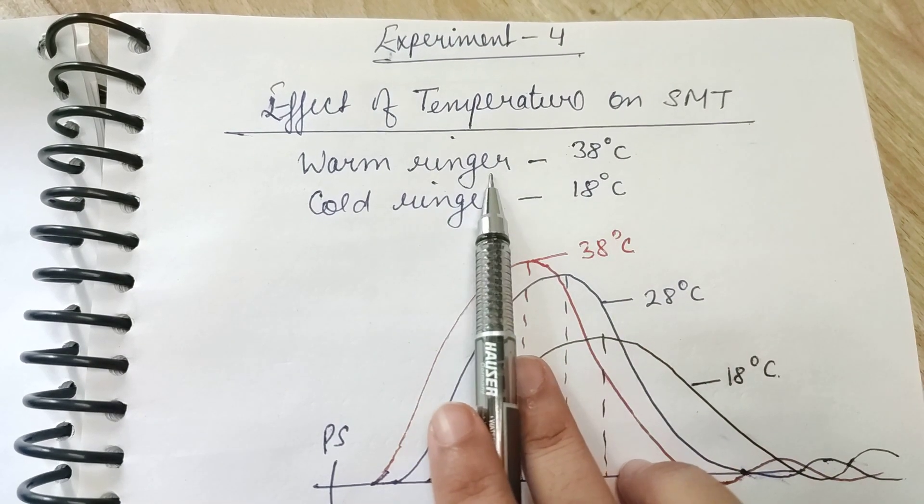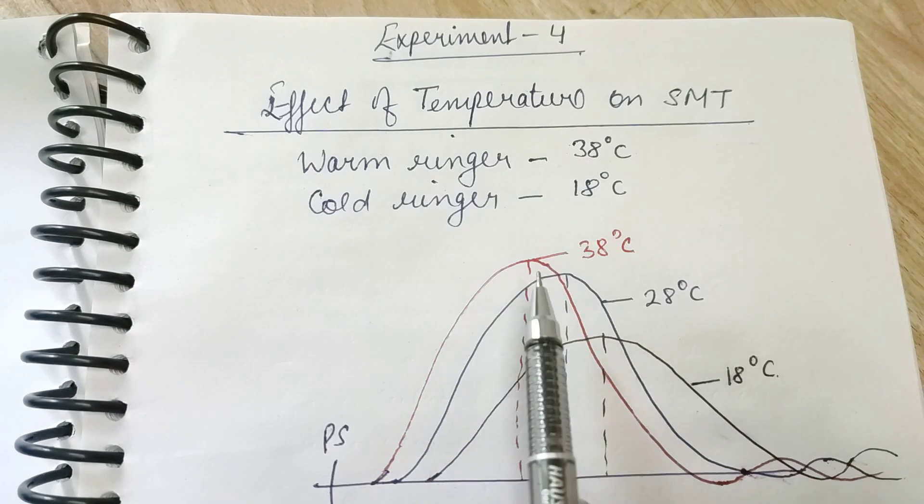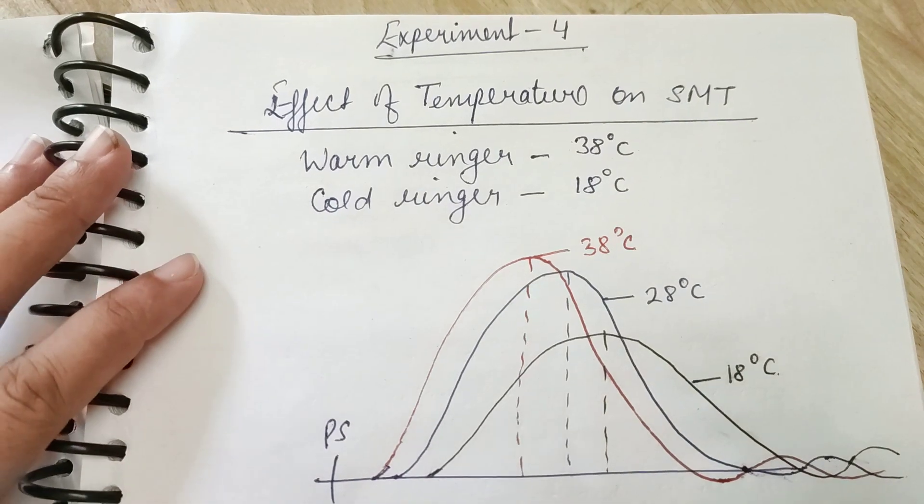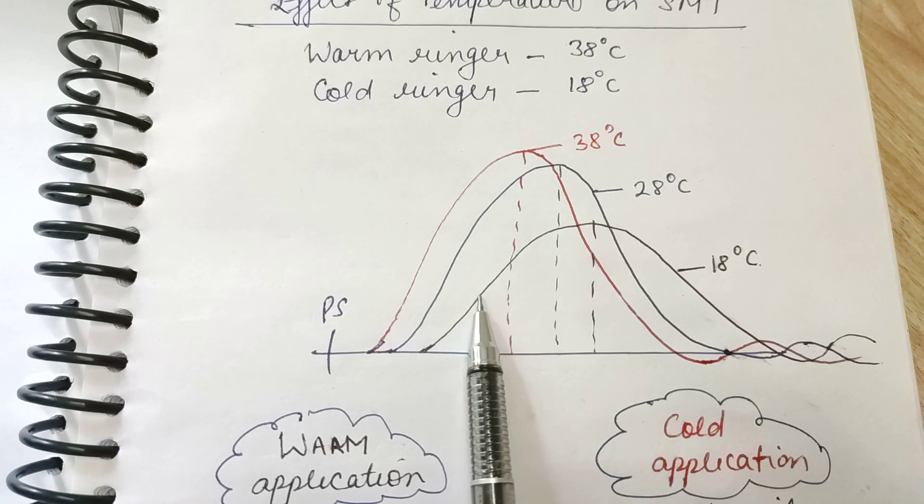The temperatures are given. So warm ringer, if we put in the chamber, what is the effect on muscle contraction if we stimulate the nerve? This is the graph which can be given in your final exam for amphibian physiology.